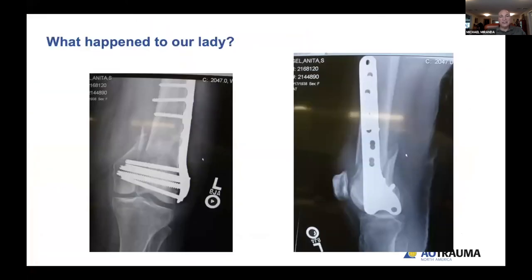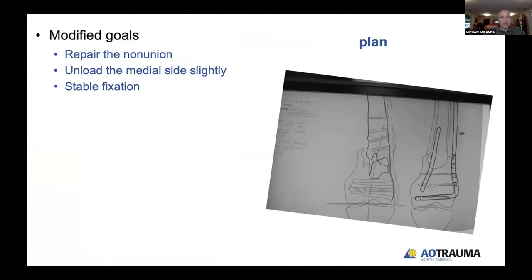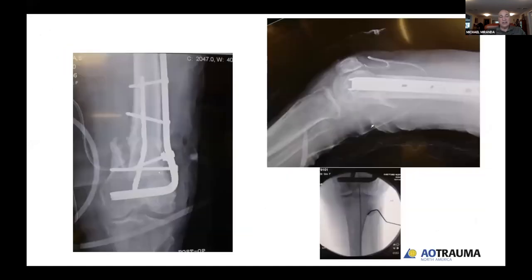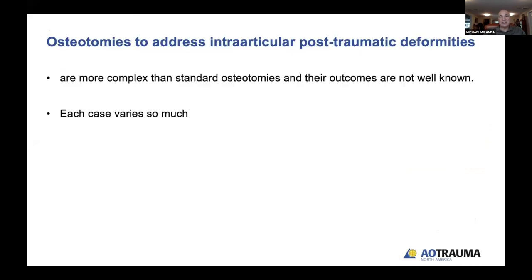What happened to the 70-year-old woman? The plan was to repair the nonunion and unload the medial side. She had already healed her malunion and the step-off had softened. Given her age and desire for the simplest approach, stable fixation was created by fixing the nonunion and unloading the joint, placing the joint line a little on the lateral side. She goes on to heal.